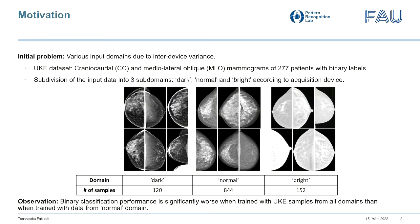Initially, we were provided a dataset consisting of mammography samples acquired with devices of various manufacturers, which are responsible for visually apparent inter-device variants we observed in the initial data. The UKE data consisted of CC and MLO mammography samples of 277 patients along with their individual binary labels. We were able to subdivide the images into three subdomains, namely dark, bright, and normal, according to their acquisition device.